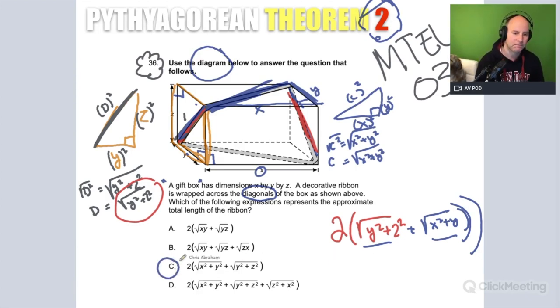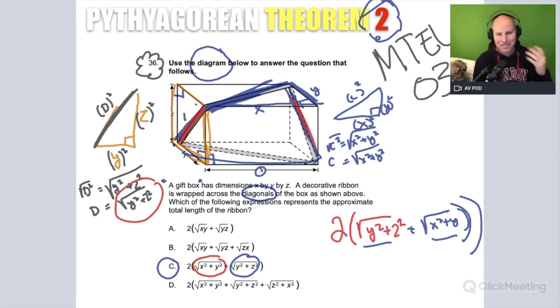Let's look at answer choice C. This is the length of the first diagonal right here. Let me match it up with the colors, because the colors might help some teachers. This is the length of that first diagonal. This is the length of that second diagonal. So we take the first diagonal plus the second diagonal, and then we're gonna double it, because this ribbon goes all the way across. Now, here's what this problem does. It takes this basic idea, the Pythagorean Theorem, and it makes it harder, not just in the diagram, but also in the answer choices.